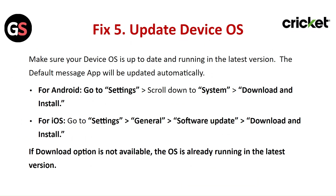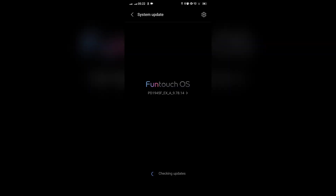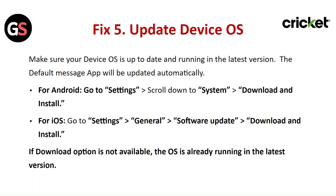Fix 5: Update the Device OS. Make sure your device OS is up to date and running the latest version — the default messaging app will be updated automatically. For Android, go to Settings, then scroll down to System, and tap Download and Install. For iOS, go to Settings, then General, then Software Update, and tap Download and Install. If the Download option is not available, the OS is already running the latest version.